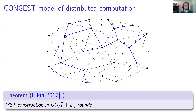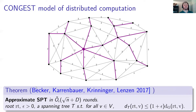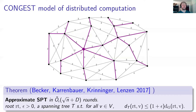Elkin constructed MST in square root n plus d number of rounds. And Becker et al. constructed an approximate SPT. So it's not exactly SPT, but it's almost as good. So for every parameter epsilon and root r, they constructed a tree such that for every vertex V, the distance to the root is at most 1 plus epsilon times the original distance in the graph, and the running time is square root d plus n.